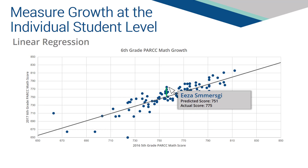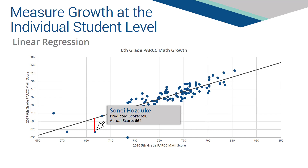A separate linear regression growth model will likely be established for ELA and math within grade level. Here is an example of a student that showed lower than expected growth, since their actual score is below the linear regression line. It is unknown how ISBE will ultimately express the distance between actual and projected achievement. The most commonly applied methodology is to standardize the distance as a z-score, which is advantageous as it provides a standardized measure that can be averaged across all grades and subjects to produce a single growth score for a building or other groups of students.